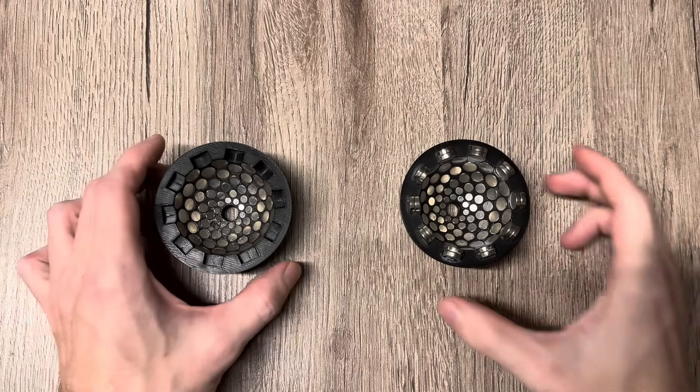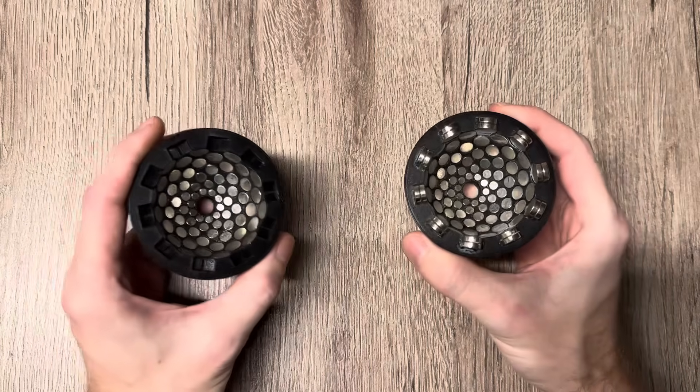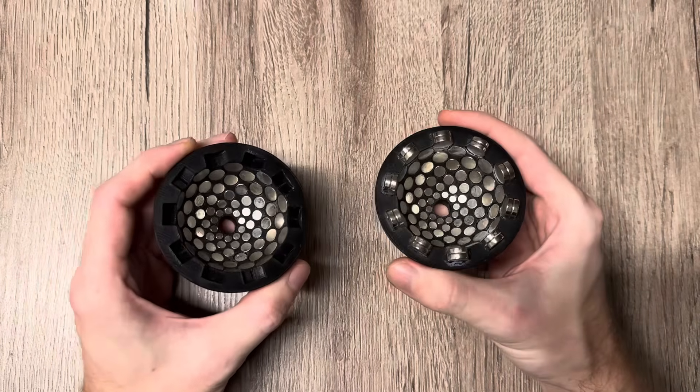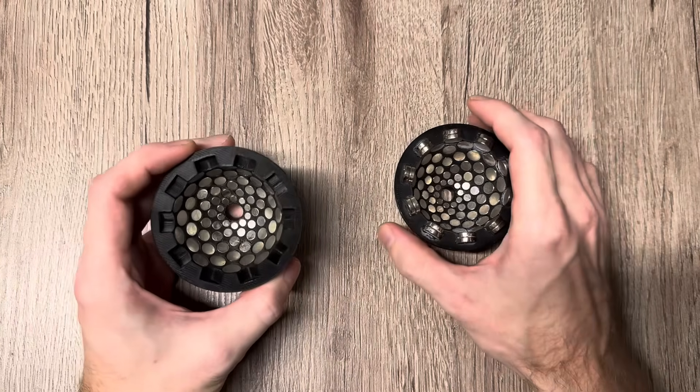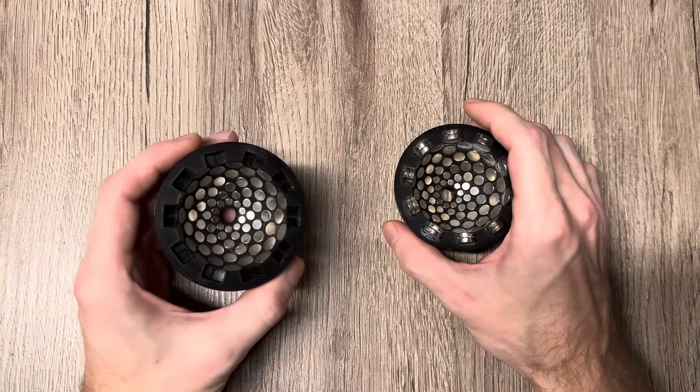Hello everybody, in this video I will show you a very special magnet array. It is a spherical array with a spiral magnet configuration. I will show you later what I mean by that.